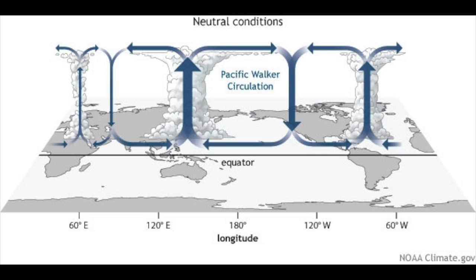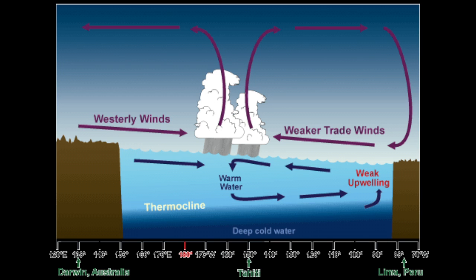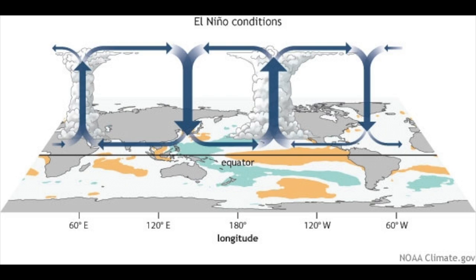So what is El Niño? El Niño is when this breaks down. What you'd normally expect is warm water along the equator across the whole Pacific basin, with easterlies pushing warm water to the west and cooler water upwelling in the East Pacific. During an El Niño, the easterlies break down a little bit. If the easterlies slow down, you don't have that upwelling, and you start to have warm water in the East and Central Pacific where you don't normally have it.